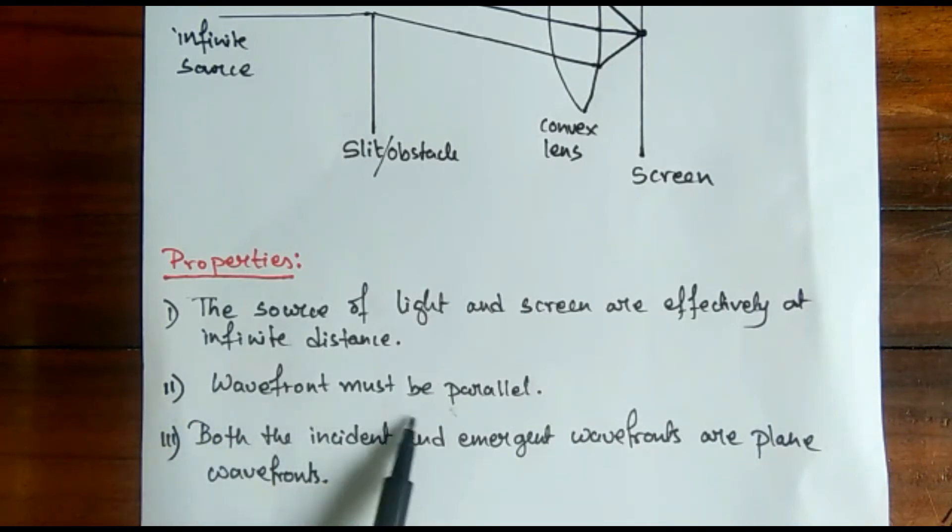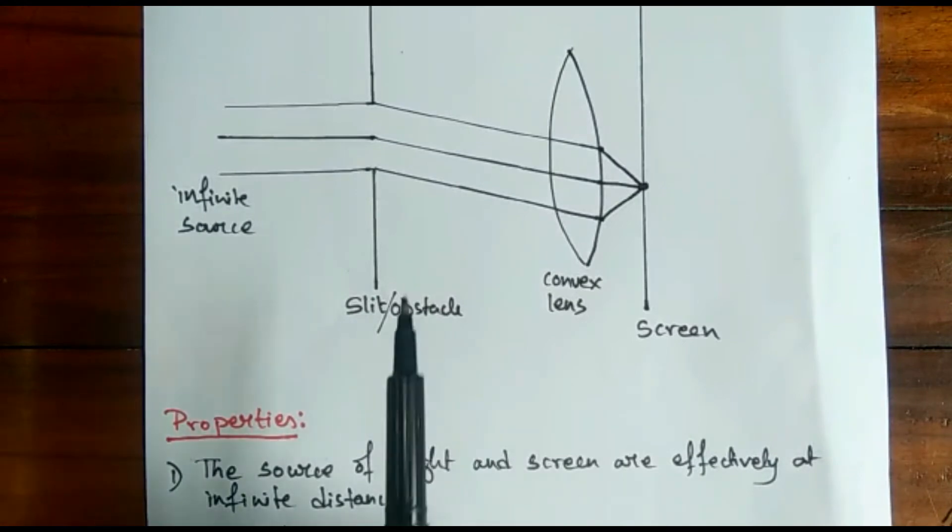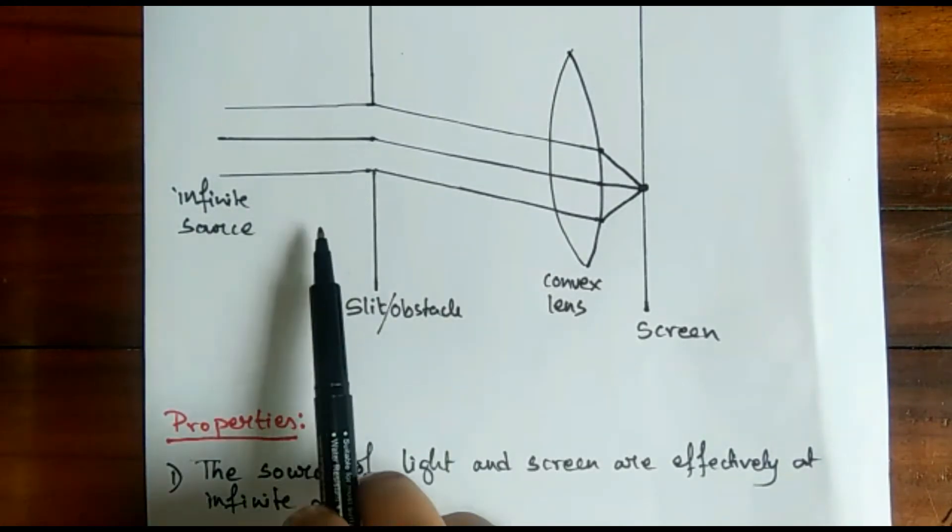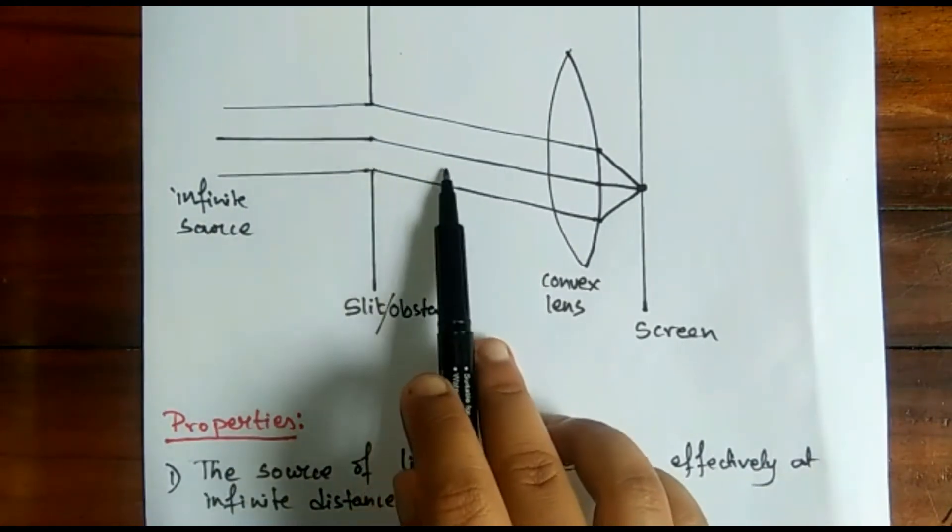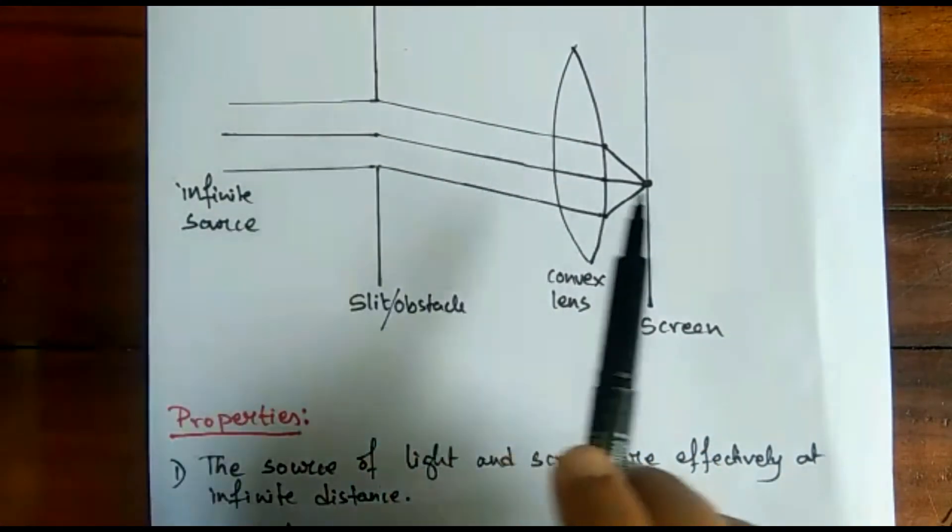The second point says that wavefront must be parallel. Since the distance is infinite, the wavefront—that is, the waves—each and every wave should be parallel.